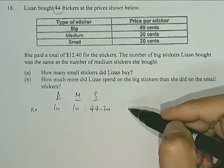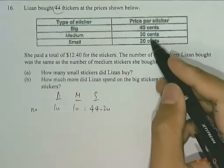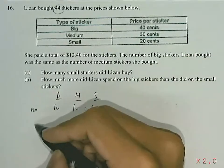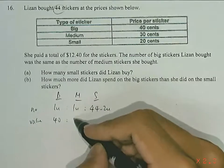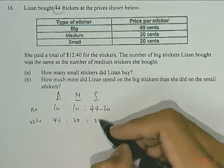So altogether, now she has 44 stickers. The value of each sticker is given in the table here. So the big sticker would cost $0.40, the medium sticker would cost $0.30, and the small sticker would cost $0.20.